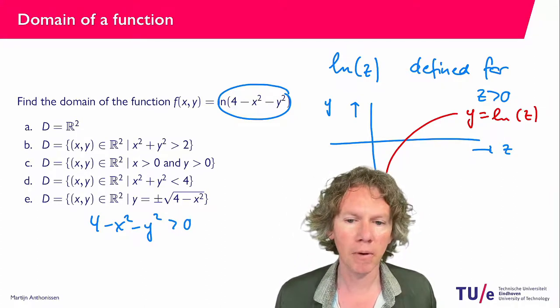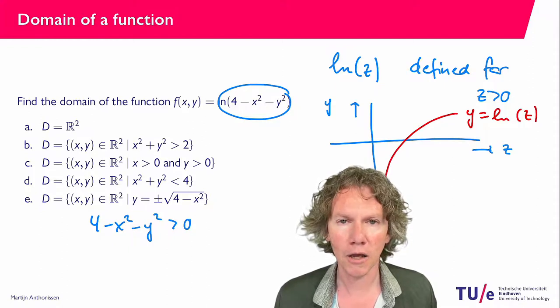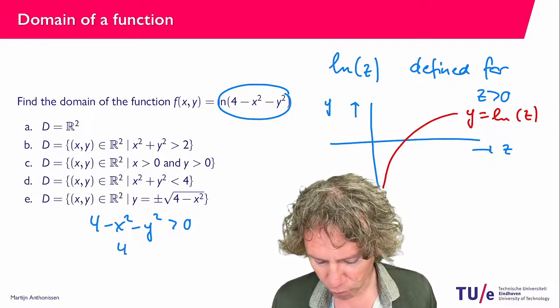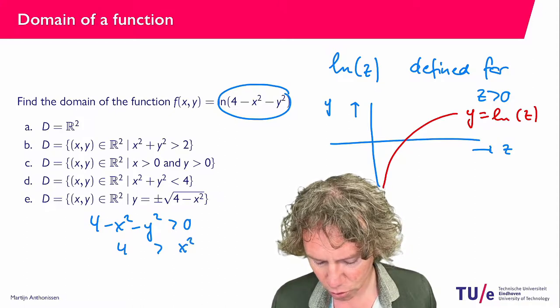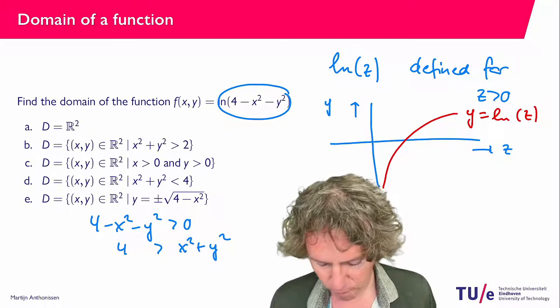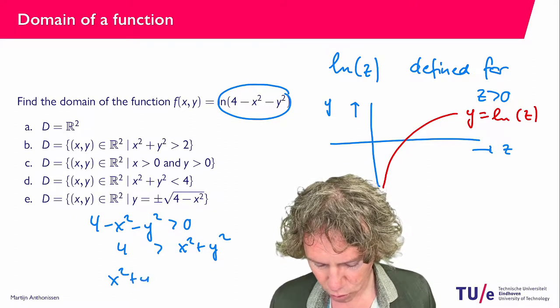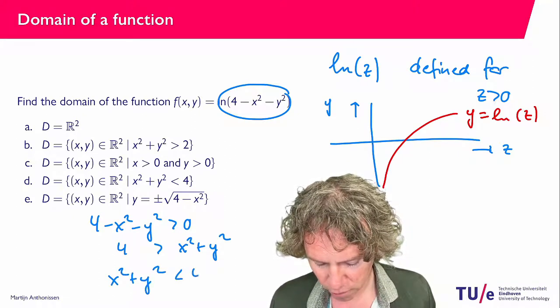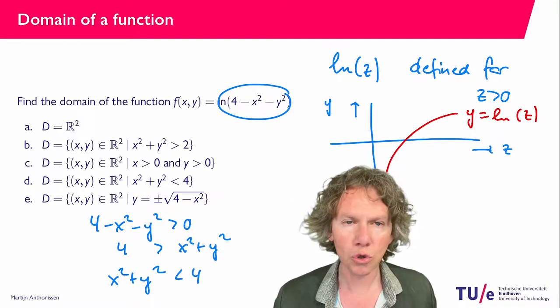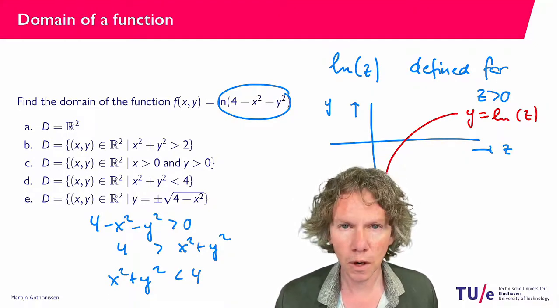and we can rewrite that a little bit by adding x squared and adding y squared to both sides of the equation and then we find 4 is larger than x squared plus y squared or if you like x squared plus y squared is less than 4. So in the plane if you draw the circle with radius 2 then all the points inside that circle are in the domain